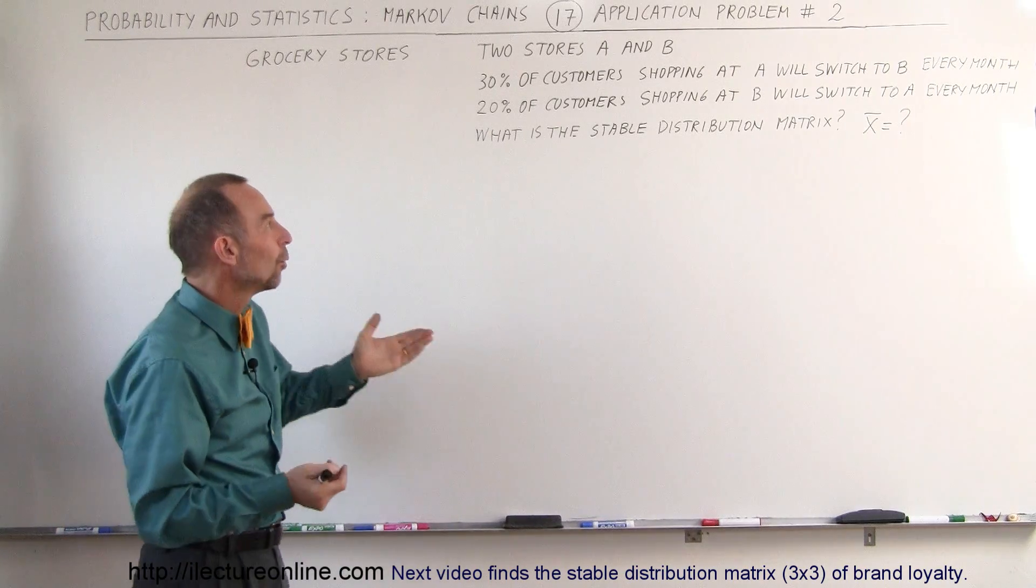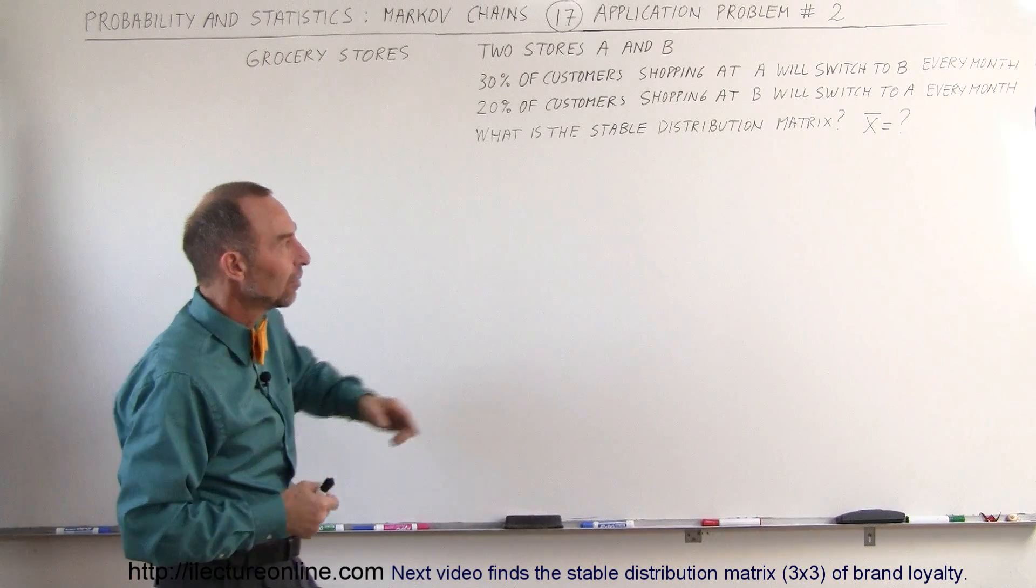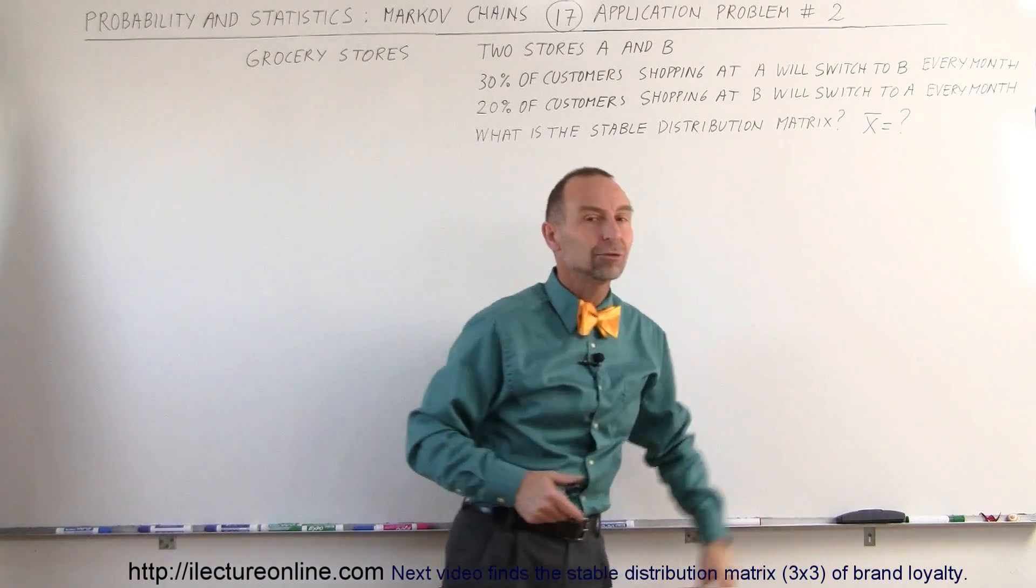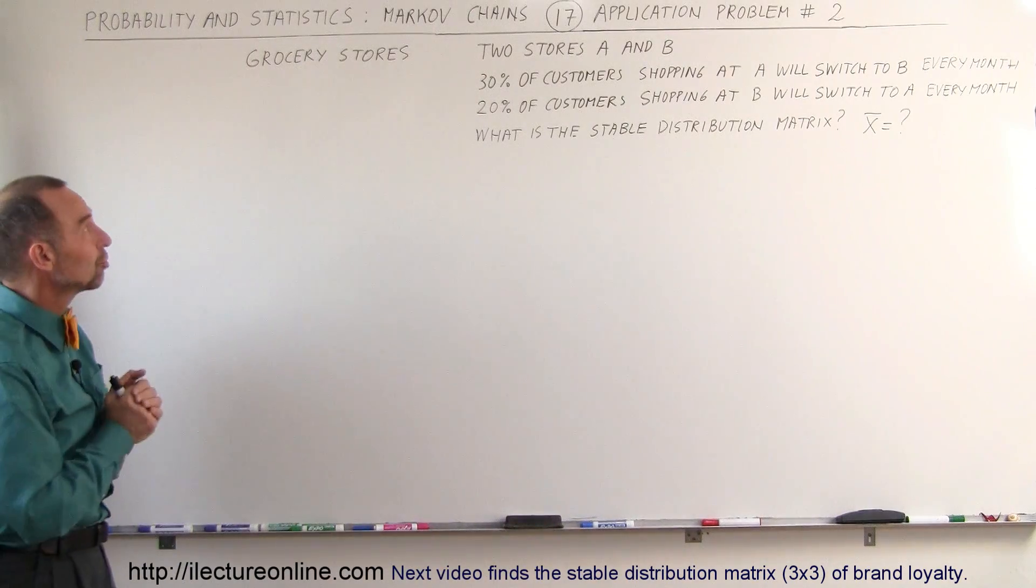The question is, what is the final stable distribution matrix? This is how we denote it in terms of Markov chains. What is the stable distribution matrix?